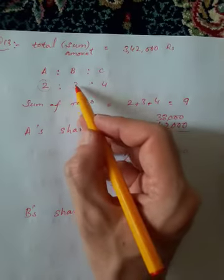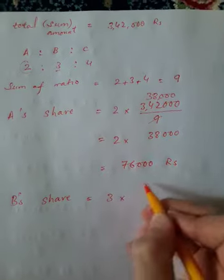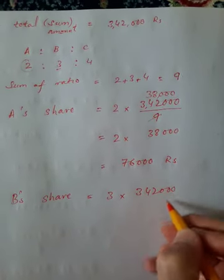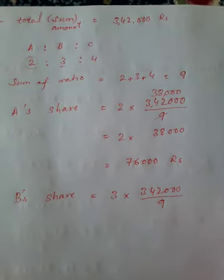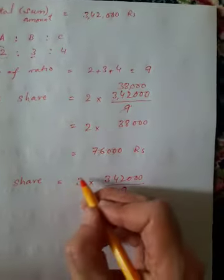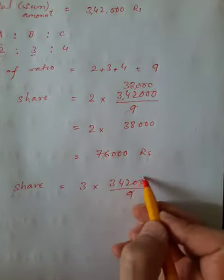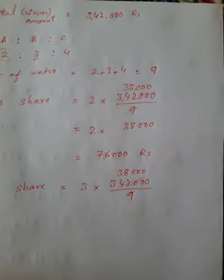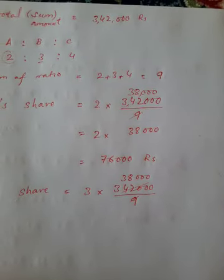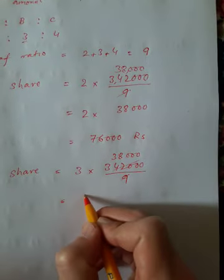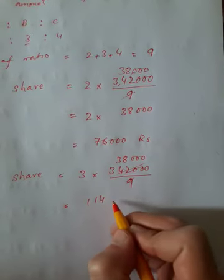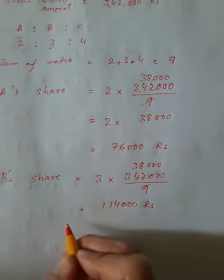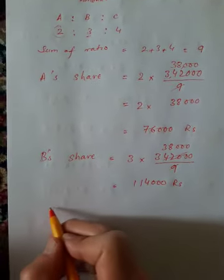B's share: The total amount 342,000 divided by total sum 9, multiplied by 3 equals 114,000 rupees.